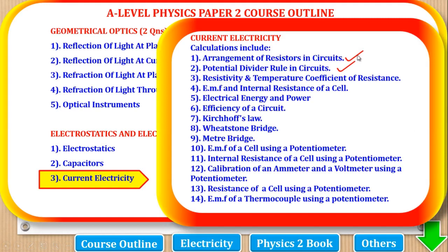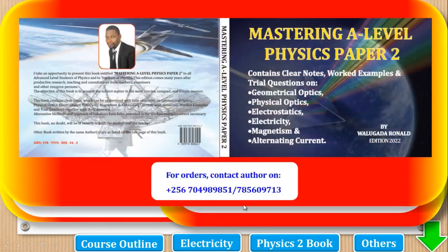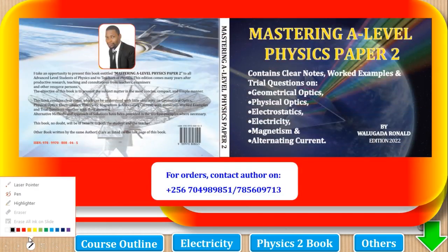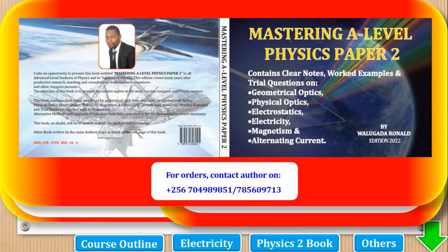Previously we saw arrangement of resistors in circuits. Now we are going to the part of potential divider rule in circuits. We are concerned with calculations, but full notes are available in the book called Mastering A Level Physics Paper 2. It has notes, worked examples, and tried questions on all the parts of physics paper 2.